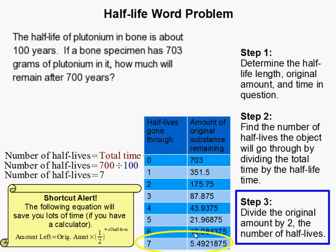This can get kind of tedious if you have to go through multiple half-lives, so there is actually a shortcut. If you can remember this equation and you have a calculator, it'll save you a lot of time. All you have to do is take the original amount and multiply it by one half raised to the number of half-lives. So you do 703 times one half to the seven. You still have to find the number of half-lives, but you don't have to divide so many times. This will get you the same answer, and that completes our problem.